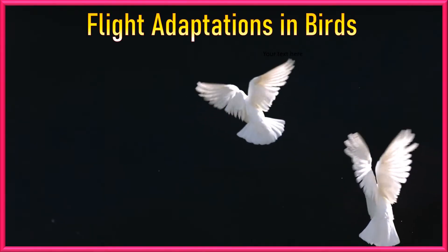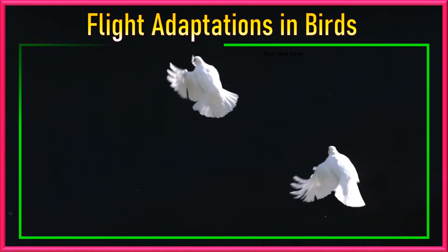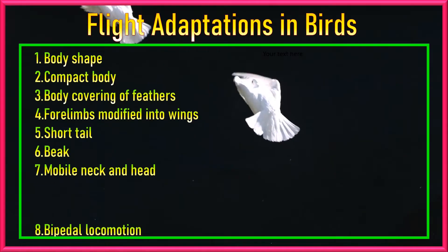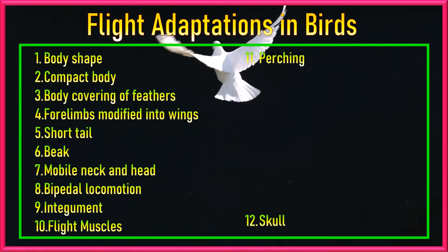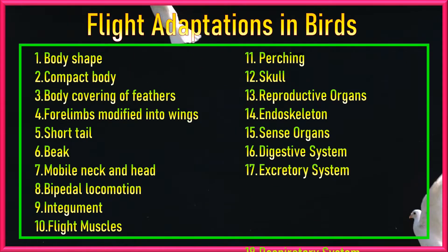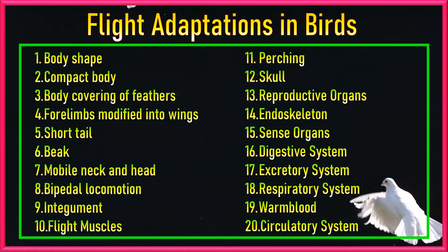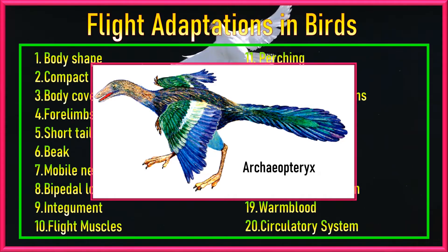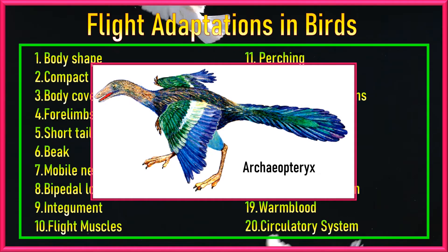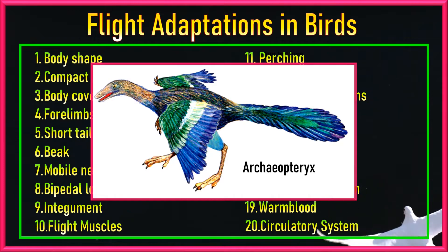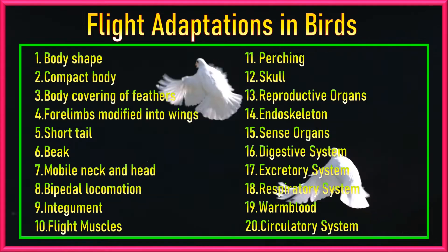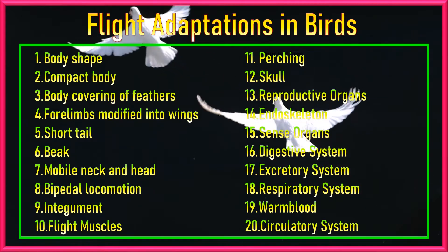Welcome. This is a complete and dedicated lecture on flight adaptations in birds. Watching this lecture till the end will provide all the knowledge to answer every question related to flight adaptations. Birds evolved from reptiles and the connecting link between reptiles and birds is Archaeopteryx. Since then, birds have changed their anatomy, physiology, and behavior over time to adopt the best features to lift, thrust, and navigate through the skies. In this video, we will learn 20 flight adaptations of birds with reasons, videos, and diagrams.